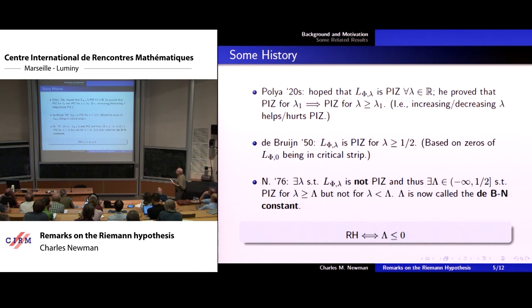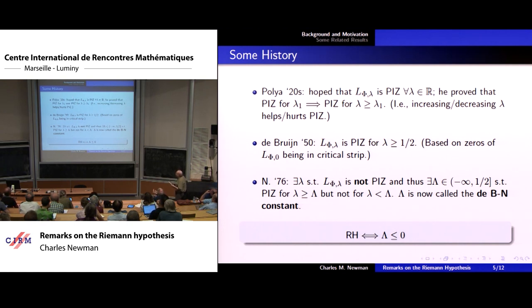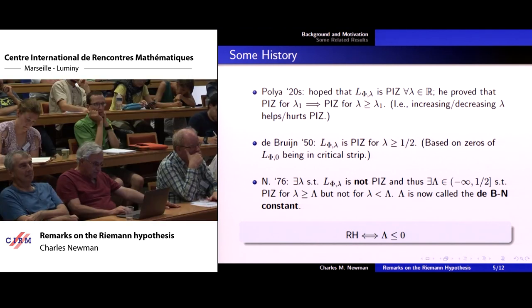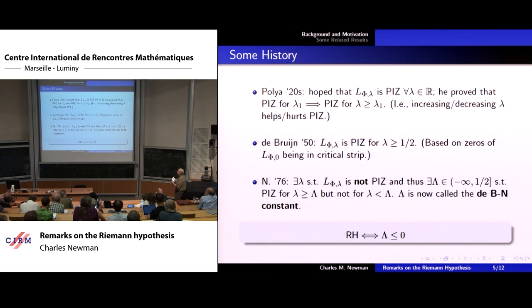I think it was Pólya's idea to put in this extra Gaussian perturbative factor, the e to the lambda u squared. He had the idea that perhaps you had the pure imaginary zeros property not just for lambda equals zero — which was the one you're really interested in — but for all real lambda. He showed that putting in this perturbative factor, where the more positive or less negative you make lambda, the better as far as the pure imaginary zeros property: if you have that property for some value lambda one, then you will have it for any lambda bigger than lambda one.